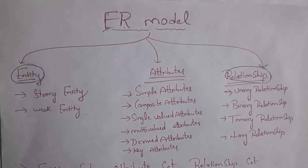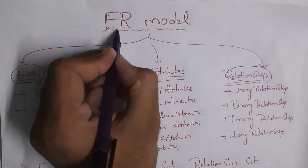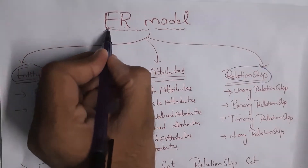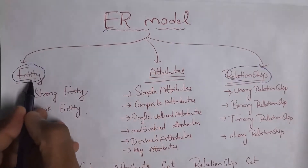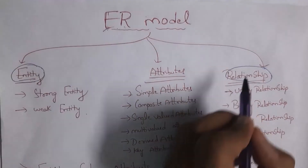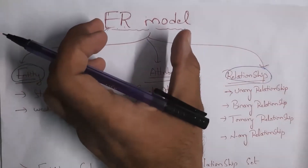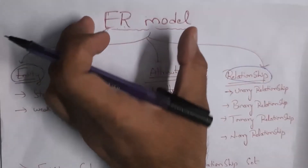At first I will explain what is ER model. In ER model, E stands for entity and R stands for relationship. This ER model is nothing but a diagram. I will give one simple real life example.